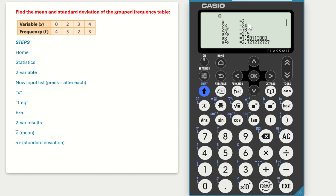So the first one here, X bar, that stands for mean, so our mean for the grouped frequency table is 2. The second last one, sigma X, is your standard deviation in terms of X, which is 1.58.